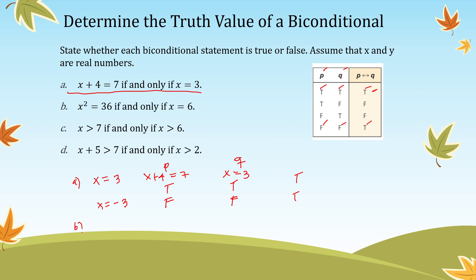For letter B: x² = 36 if and only if x = 6. When x = 6, that is correct — both P and Q are true, so the biconditional is true. But when x = -6: x² = 36 is true (P is true), but x = 6 is false (Q is false). Since P is true and Q is false, the truth value of the biconditional statement is false.